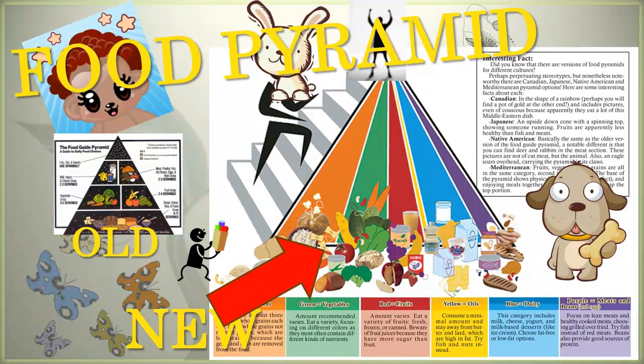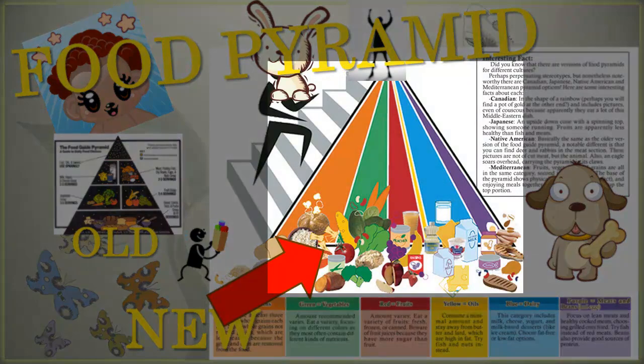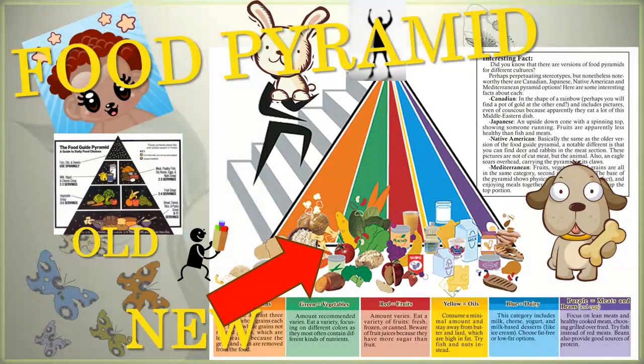Signal-to-noise ratio also applies to visual aids as well. This PowerPoint slide has too many distractions. Obviously, this is supposed to be about the new food pyramid, which is actually there,